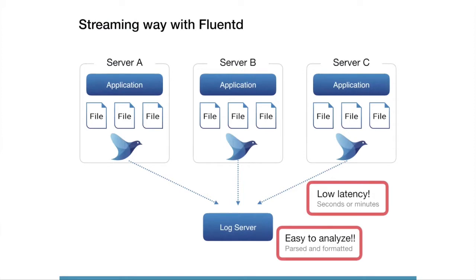This is one example of streaming data collection for local files. In this case, Fluentd monitors log files. When an application writes logs to local files, Fluentd reads logs immediately and sends logs to the central log server with low latency. The merit of this approach is no need to wait for all data to be logged — you can see newer logs quickly in the log server via dashboard or other tools.